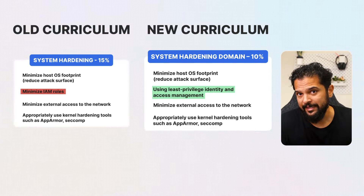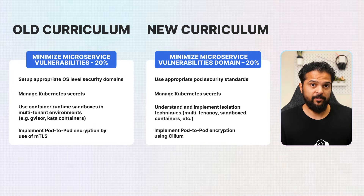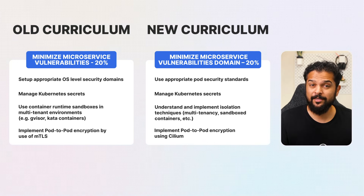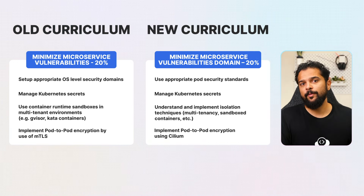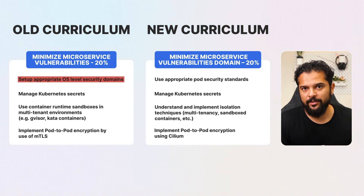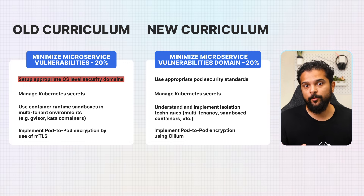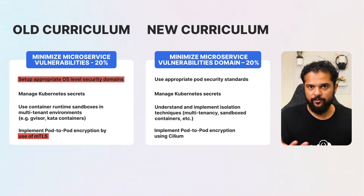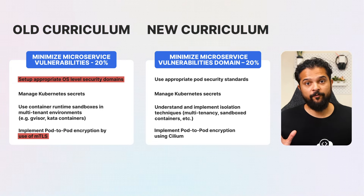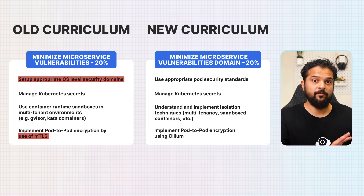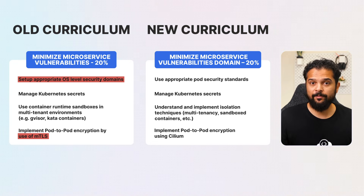The next domain is minimizing microservice vulnerabilities, which remains at 20 percent weighting. The updated curriculum does include some changes. Previously, this domain emphasized setting up appropriate OS-level security domains, managing Kubernetes secrets, using container runtime sandboxes in multi-tenant environments, and implementing pod-to-pod encryption using mutual TLS (mTLS). These practices focused on ensuring that microservices were isolated, secure, and could communicate safely.